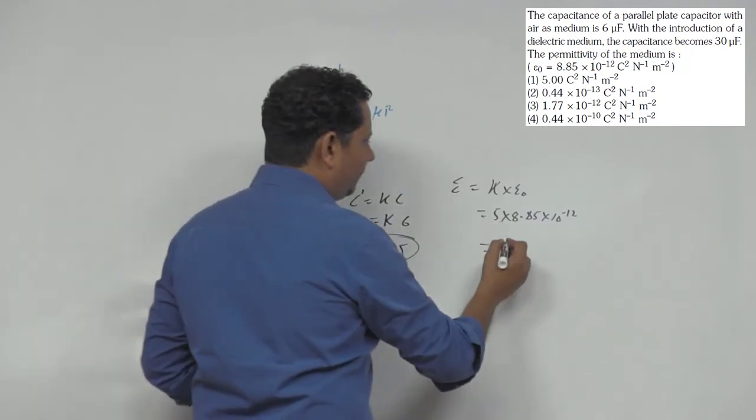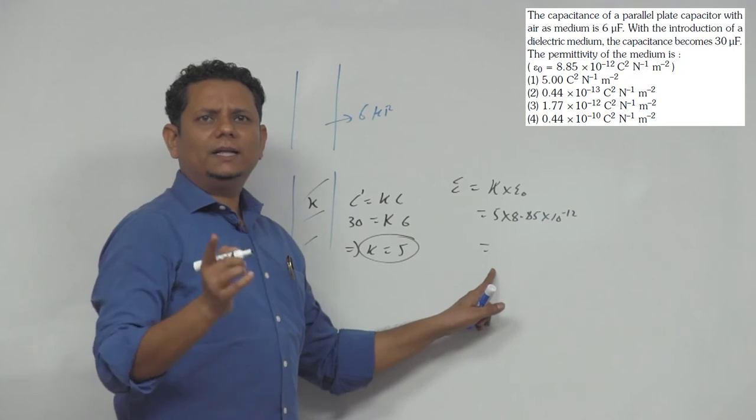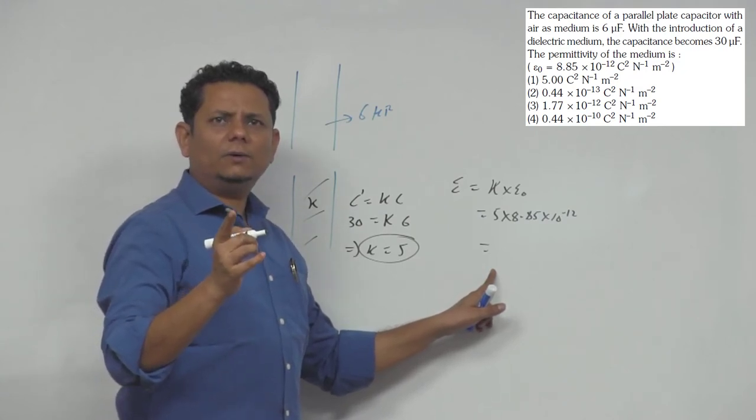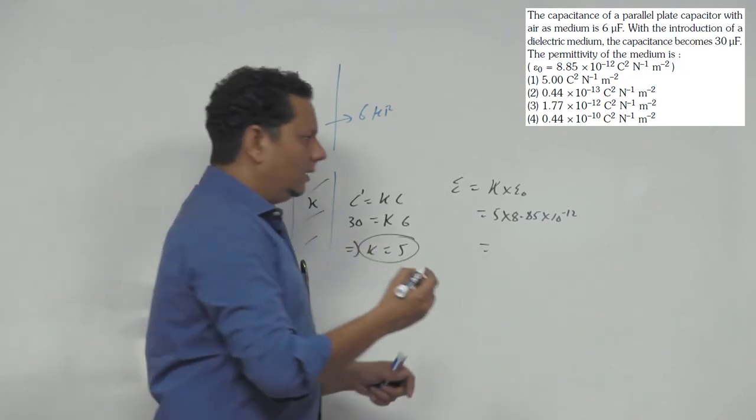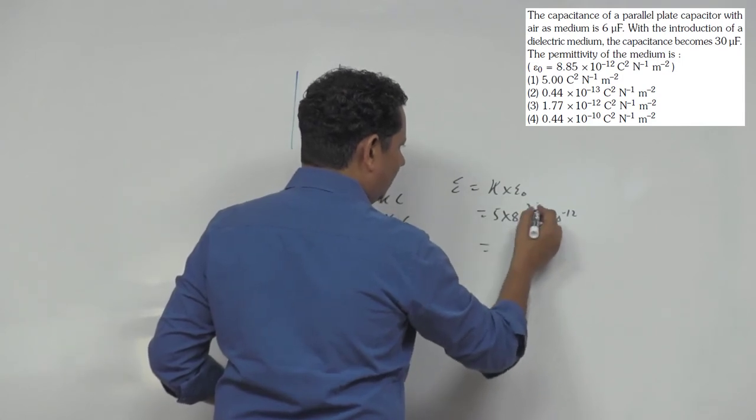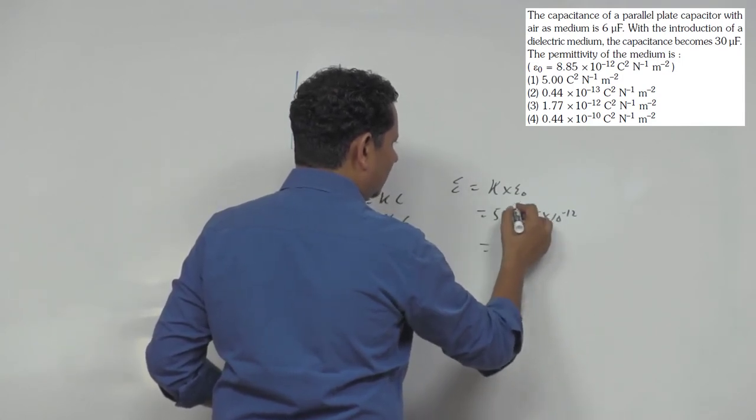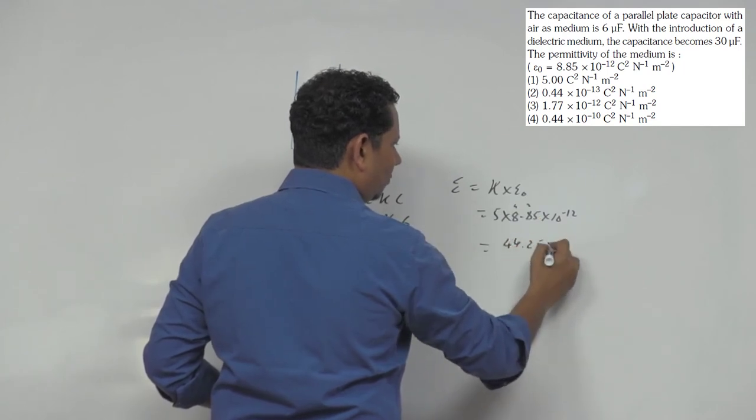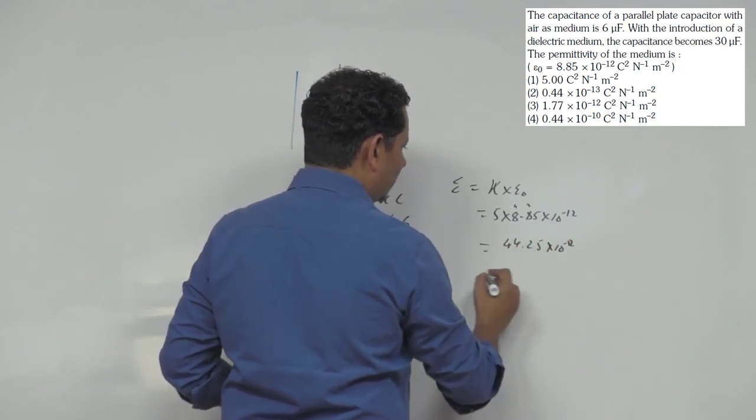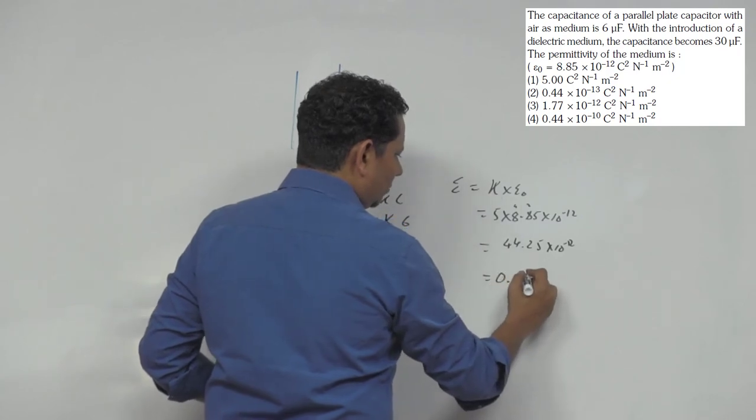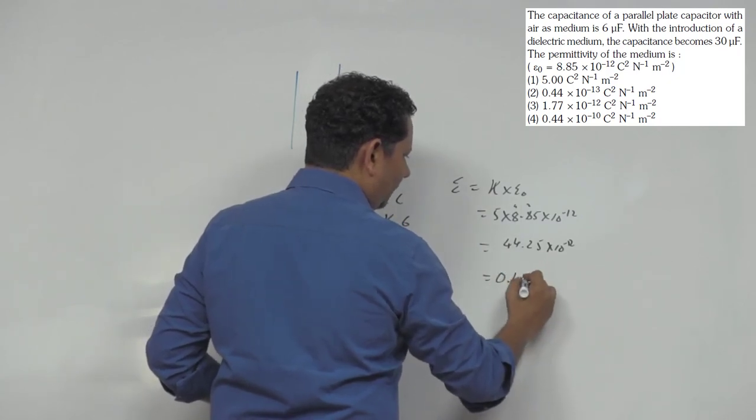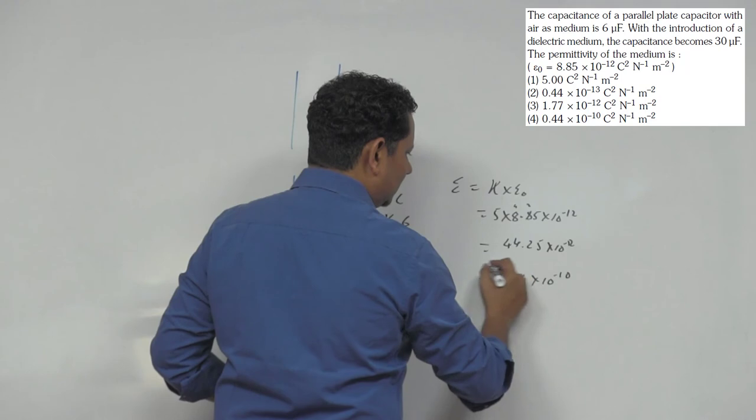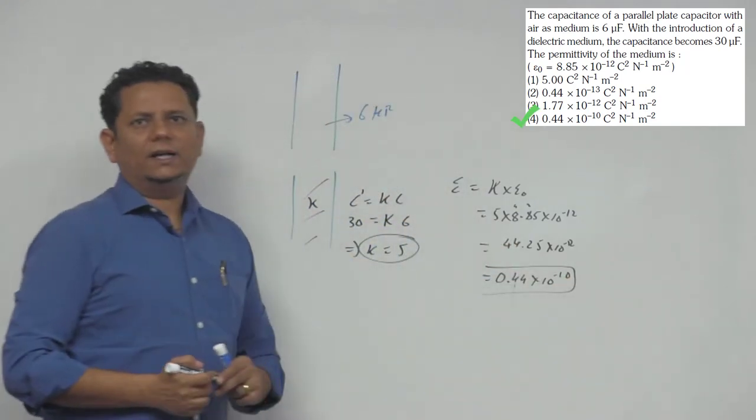इसको multiply करके हमें answer मिल जाएगा. तो इसे जब हम solve करेंगे, 5 into 8.85 gives us 44.25 into 10 to the power minus 12, जो इसको मिल सकते 0.44 into 10 to the power minus 10. So this would be our final answer.